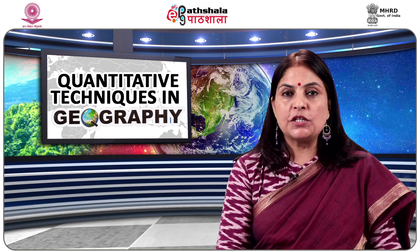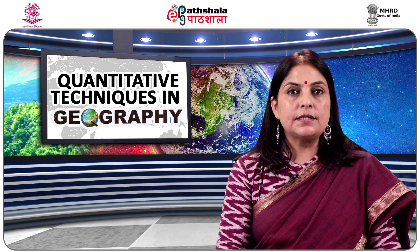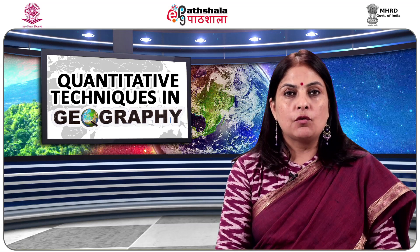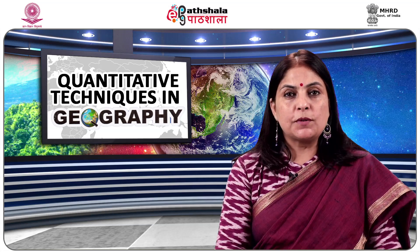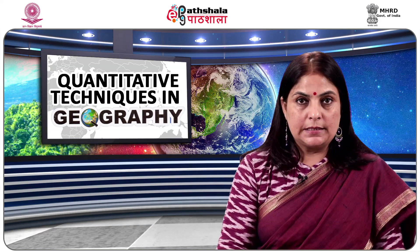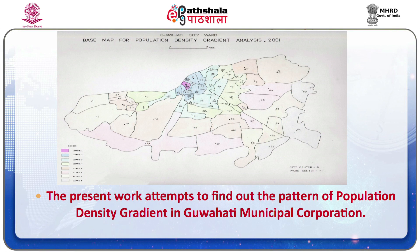To understand the spatial gradient of population in Guwahati city, gradient analysis was pursued using wardwise population data collected from Guwahati Municipal Corporation for the year 2001. Figure 2 shows the spatial pattern of population density in Guwahati. Table 3.2 shows the wardwise data of area and population of Guwahati city. Table 1 gives the glimpses of area and population of the wards, while Table 2 provides details about population density in different wards of Guwahati city.